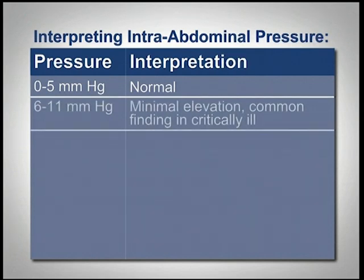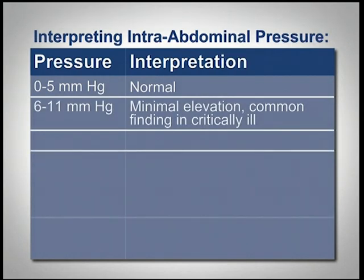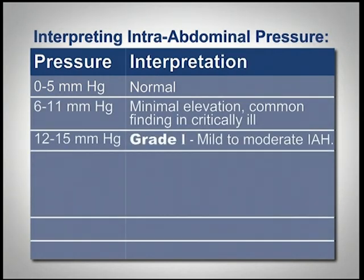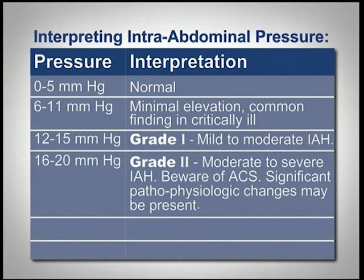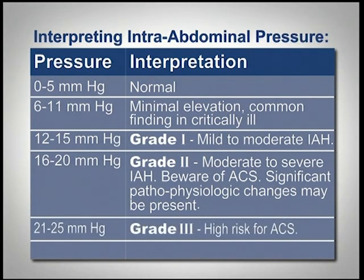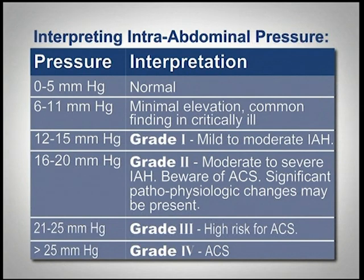Normal pressures should not exceed 12 mmHg. Readings in the 12 to 20 mmHg range are considered intra-abdominal hypertension and should be treated using medical interventions based on your hospital protocol. A reading above 20 mmHg may indicate abdominal compartment syndrome, requiring immediate aggressive intervention, including surgical decompression if necessary.